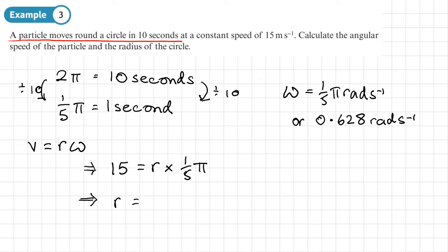So times in both sides by 5 and divide by pi, we get a radius as 75 over pi. And if we change that to decimals, we'll get a radius as 23.9 meters to three significant figures.